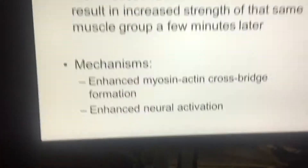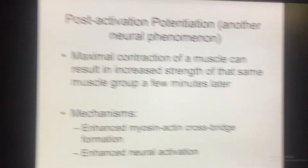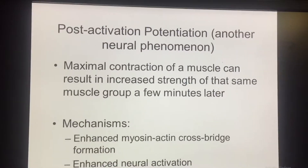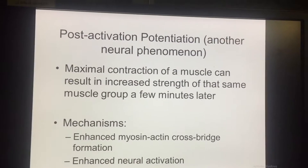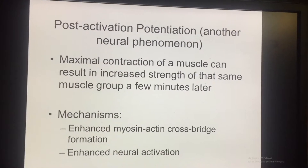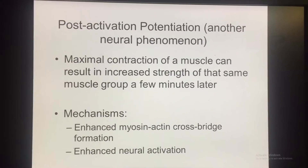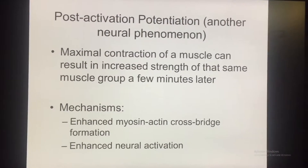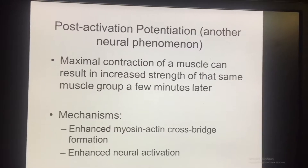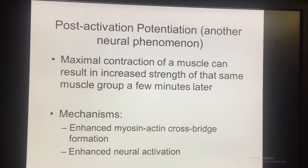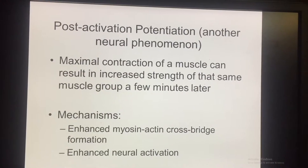That is your introduction for your KIN 225 class today. What I want to talk about first today is another neural phenomenon. This one is called post-activation potentiation. The definition of post-activation potentiation is when you do a maximal contraction of a muscle, it can result in increased strength of that same muscle group a few minutes later.